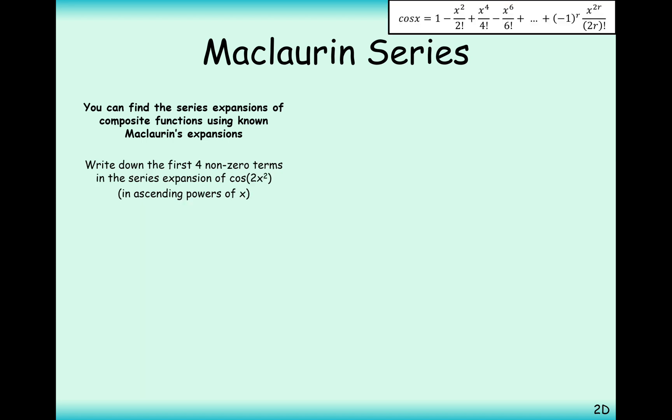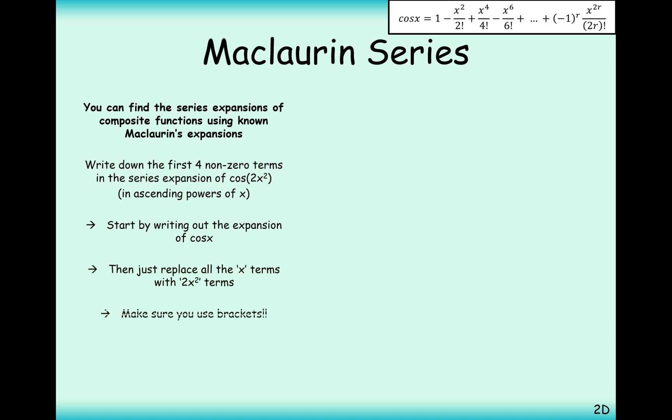What we're now going to use is the cos x Maclaurin series expansion to answer the question: write down the first four non-zero terms in the series expansion of cos(2x²). We're going to replace x with 2x² basically. So start by writing out the cos x expansion, then just replace every x term with 2x², and make sure you've expanded the brackets correctly.